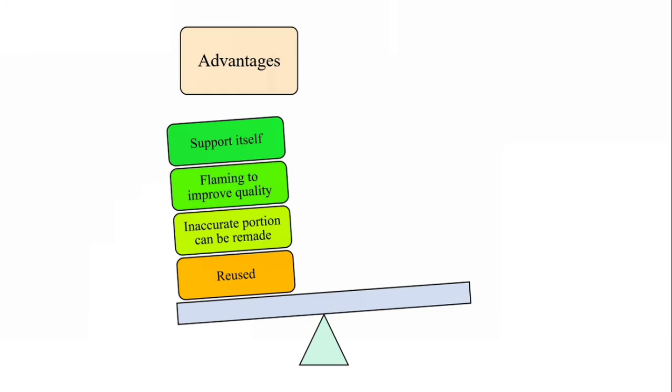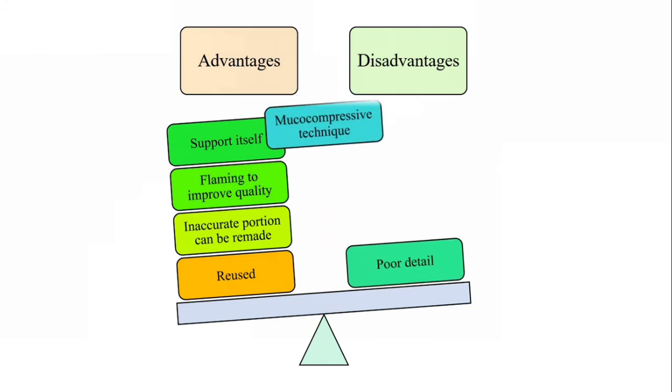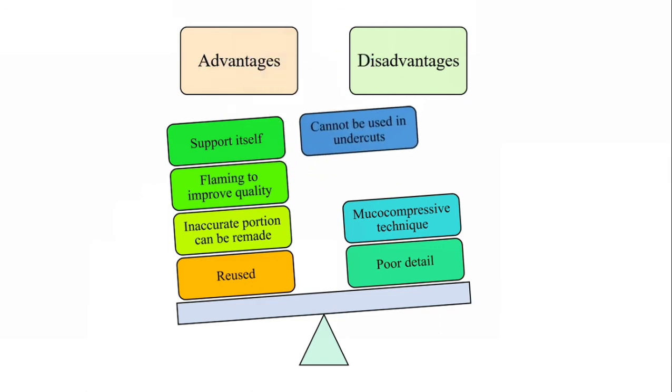What are the disadvantages? First is poor detail reproduction. It takes impressions by mucocompressive technique—the material is compressed. When you do any movement, the tray is going to come out. It cannot be used on undercuts—it doesn't have flow, and if it sets, you won't be able to take it out from small interproximal areas.